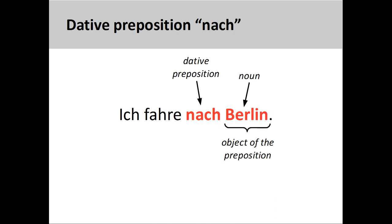The preposition nach can have several meanings. When used with geographical locations such as cities and countries, it can mean going to or traveling to. For example, ich fahre nach Berlin — I am traveling to Berlin. When talking about locations within a city or people, however, you need to use the preposition zu, which we will look at shortly. The exception is when referring to your own home as a destination — in this instance you use nach. For example, ich fahre nach Hause — I am going home.